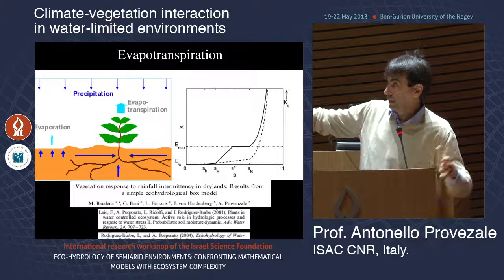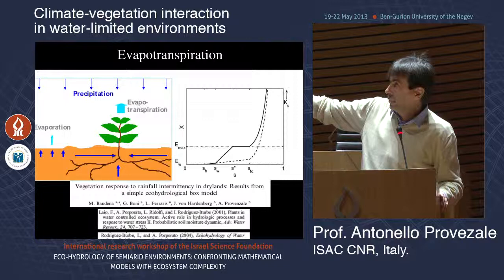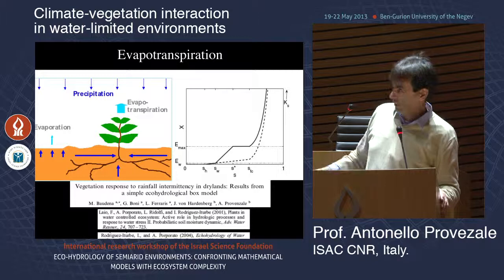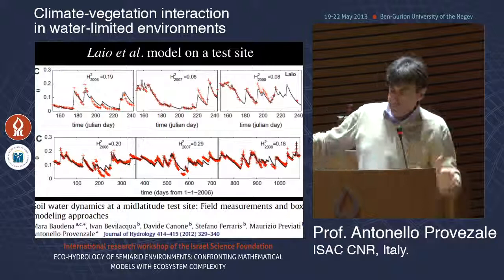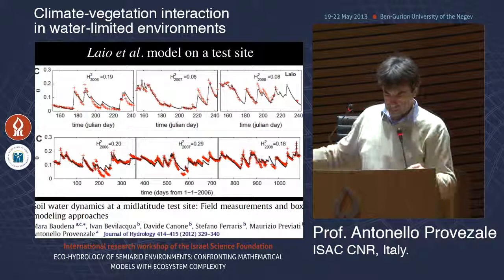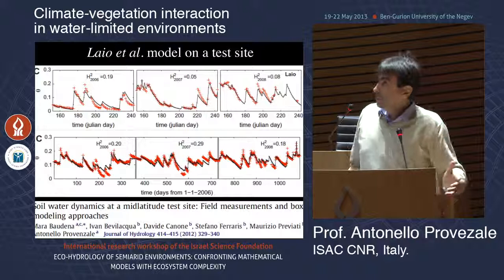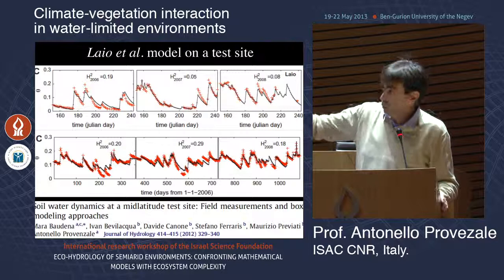Evapotranspiration has contributions from vegetated areas and from bare soil (pure evaporation), which is much less than transpiration. We tested this simple model against measurements at a mid-latitude test site in Italy over three years. The model simulates continuously and the soil moisture output is not bad — not perfect, but it does something.